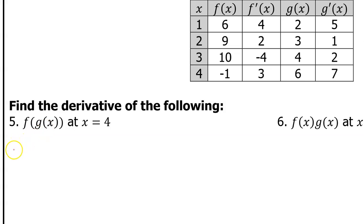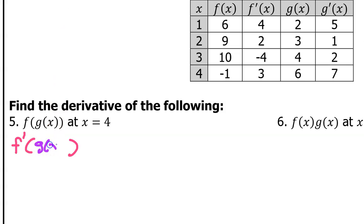So you start by taking the derivative of the outer function — I'm going to do f prime — and at first you leave the inner function alone, so I have g of x. But then the chain rule says you multiply by the derivative of the inner function, so you multiply by g prime.